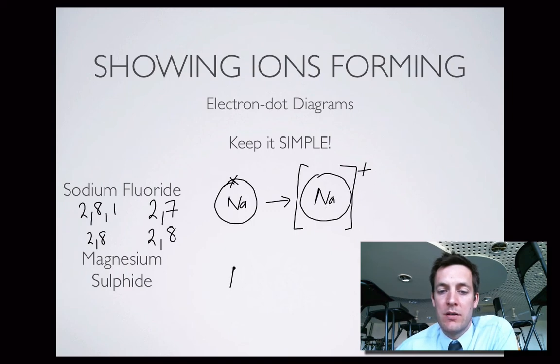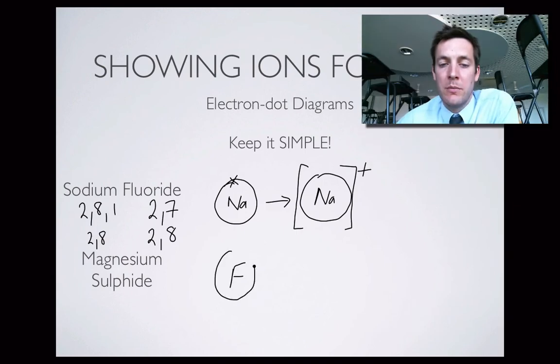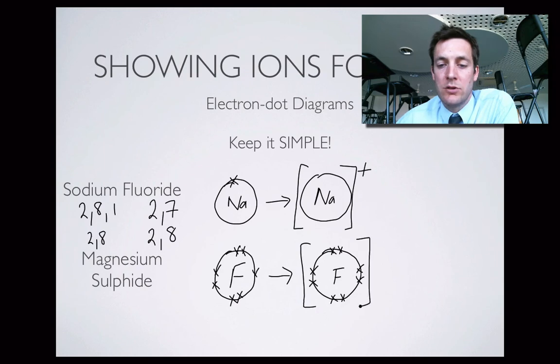Do the same thing to show a fluoride ion forming but we're going to start with seven electrons in the outer shell. Fluorine. Fluorine would like to gain one. So once again we're going to show what happens once the electron transfer has occurred. We've now got eight electrons in the outer shell so fluorine's outer shell is full. And we're going to put a square bracket around it to show the charge. And what charge have we got this time? Well we've gained one electron so it's going to be a minus one charge.